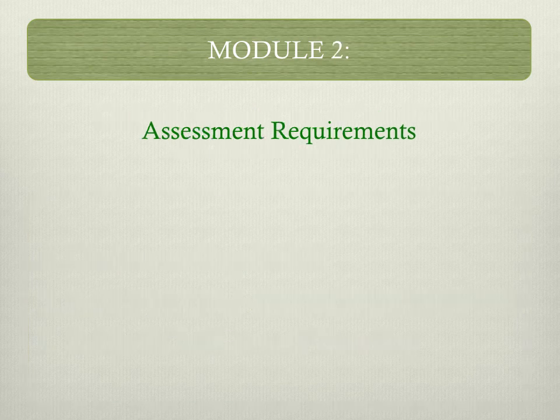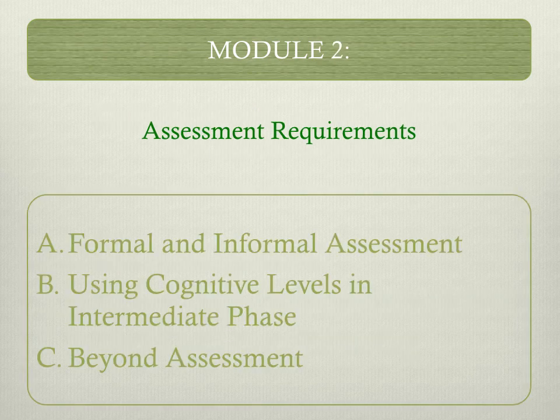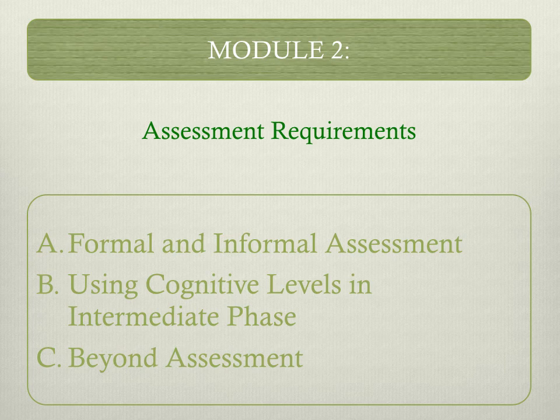Module two looks specifically at the assessment requirements. The first unit looks at formal and informal assessment in general, and then also looking at what the formal assessment requirements are for your subject. The second unit looks at the cognitive levels in the intermediate phase and how to use them, and then looking at beyond assessment — things like what do we do when learners are absent, how do we deal with this, and what does the policy say about this.